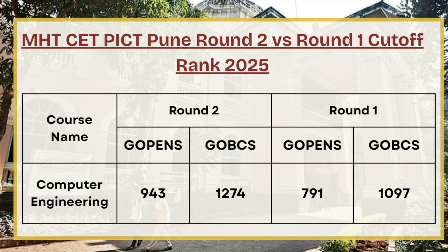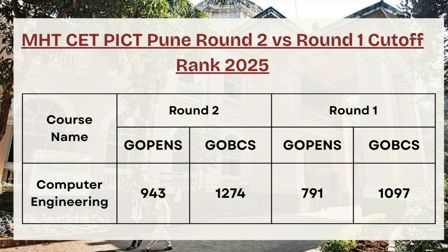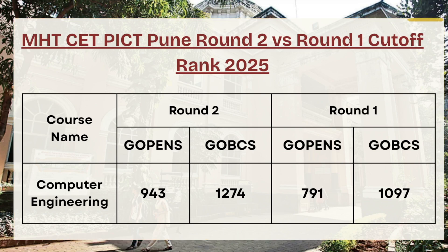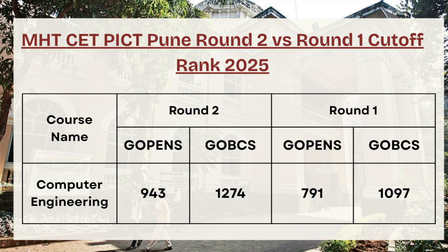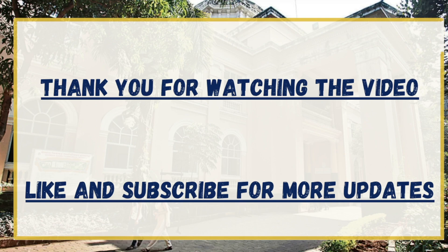Last in the list we have Computer Science Engineering. For G Open, the Round 2 cutoff rank was 943 whereas Round 1 was 791, a gap of 150 rank. A similar increment can be expected for Round 3. For G OBC category, the Round 2 cutoff rank was 1274 and Round 1 was 1097.